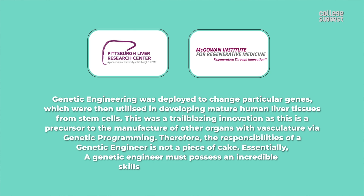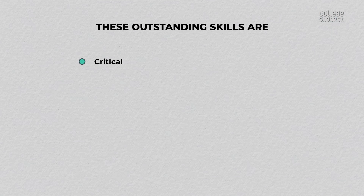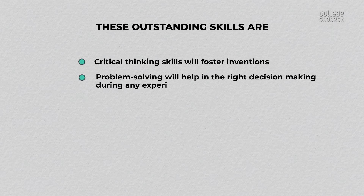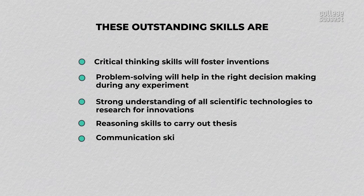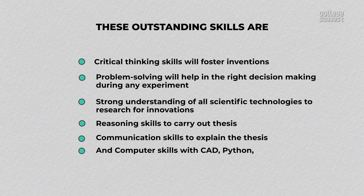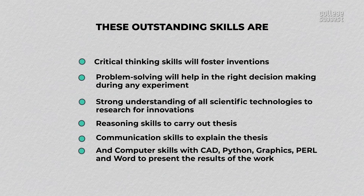Essentially, a genetic engineer must possess an incredible skill set to be adept in this field. These outstanding skills are: critical thinking skills to foster inventions; problem solving to help in the right decision-making during any experiment; a strong understanding of all scientific technologies to research for innovation; reasoning skills to carry out a thesis; communication skills to explain the thesis; and computer skills with CAD, Python, Graphics, PERL, and Word to present the results of the work. These skills will transform you into the perfect genetic engineer.